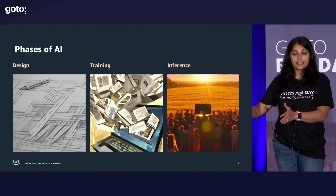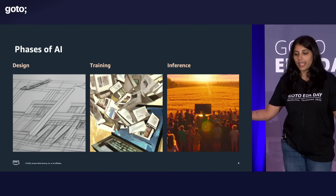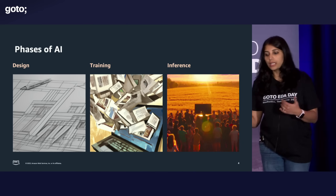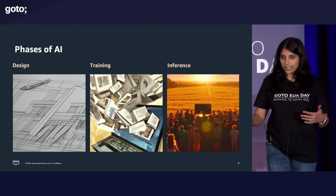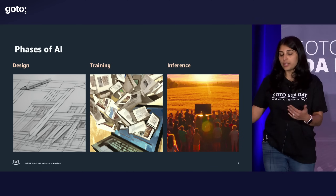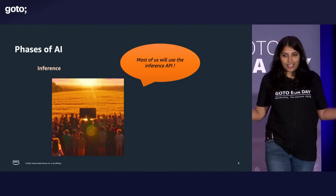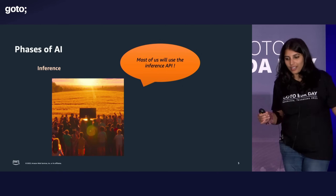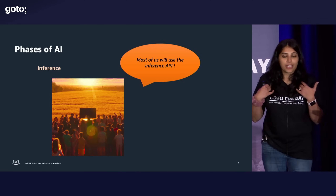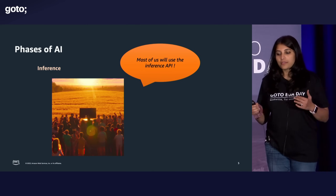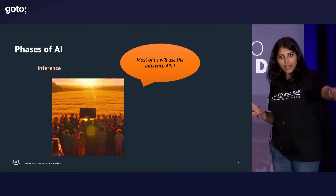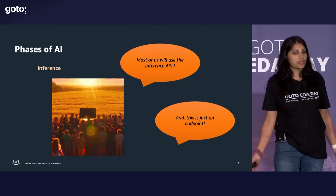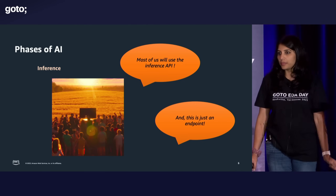Once the data scientist figures out the best model or algorithm for the task at hand, then comes the inference phase — where you're using that model to predict for unseen data, like production data. But for most of us, this inference is what matters as an application developer. The model building and training does not matter. The inference is what matters to us as application developers and consumers. Most of us will use that inference API to just call the API — the model is a black box — and we get the response or prediction from the API. For 99% of us, it's just an endpoint.